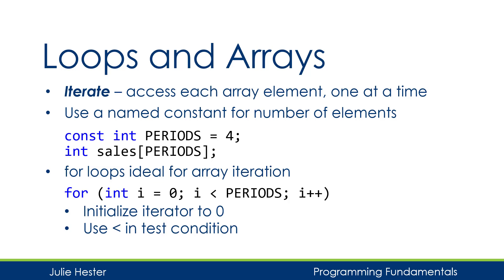With a four-element integer array, the subscripts for the elements are numbered 0, 1, 2, and 3. If I'm going to reference the elements in this array, those are the values I want variable i to have. It's easy to work with if i in my for loop has values 0, 1, 2, and 3. Once i has a value of 4, that's no longer a valid subscript for this array and I would not want to continue to execute my loop. For each of the examples I'm going to show you, I'm going to use this sales array with this named constant periods.